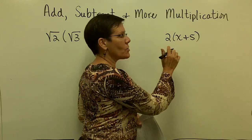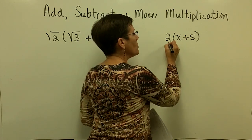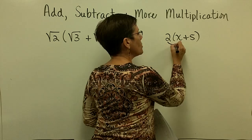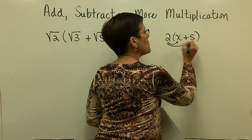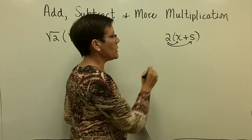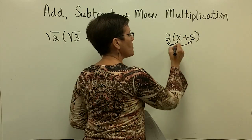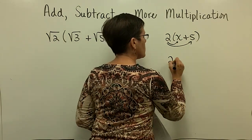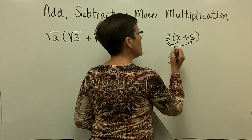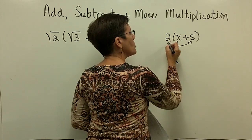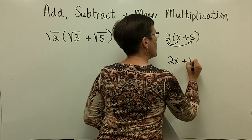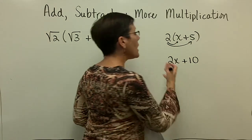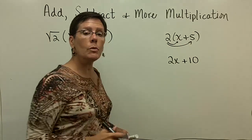Let's look at something that you're comfortable with. You know that this 2 needs to be distributed through the binomial. So 2 times x is 2x, and then 2 times positive 5 is a positive 10. So you've distributed.